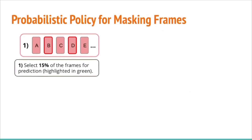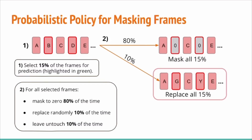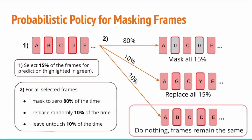I will introduce how we mask frames at random. During training, we use a probabilistic policy to generate masked frames dynamically. In the first step, we randomly select 15% of the input frames for masking. In the second step, for all the 15% selected frames, we roll the dice again. For 80% of the time, we mask all the frames to zero — for example, frames B and D will be set to zero. For 10% of the time, we replace the selected frames with random frames from within the same utterance. For the other 10% of the time, we leave them untouched, so the input frames are identical to the original ground truth frames. Note that only one case will happen at a time: either we mask all 15%, replace all 15%, or we do nothing.